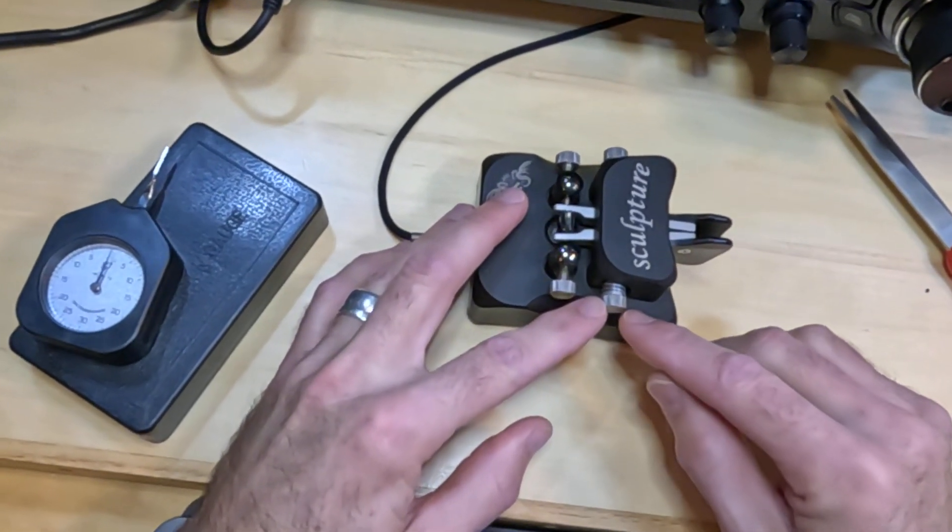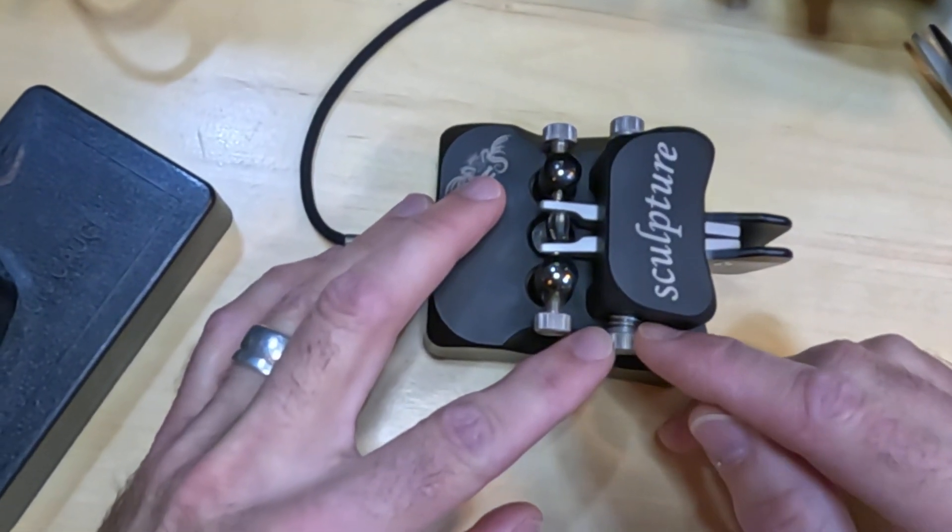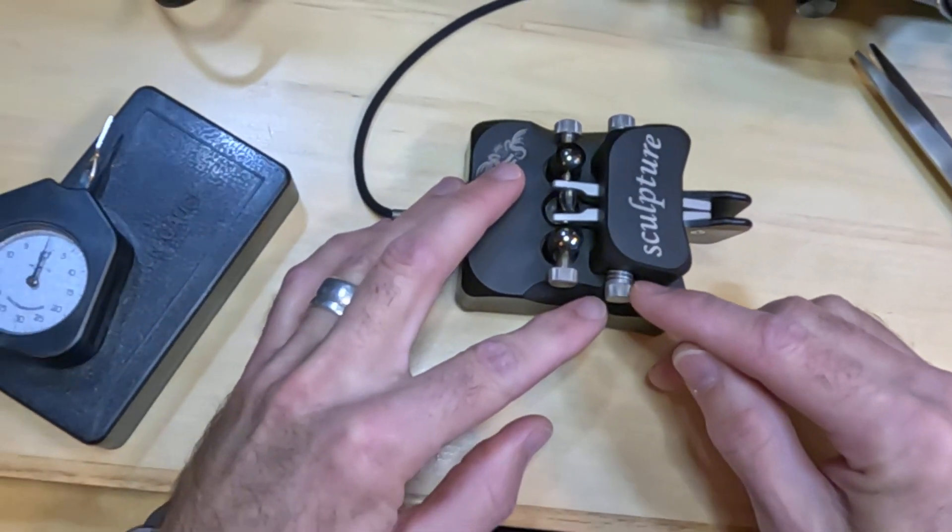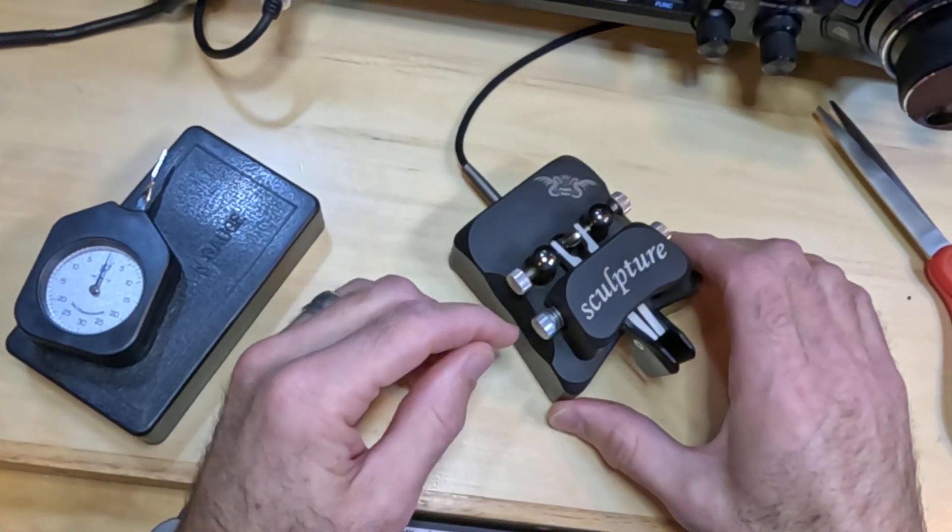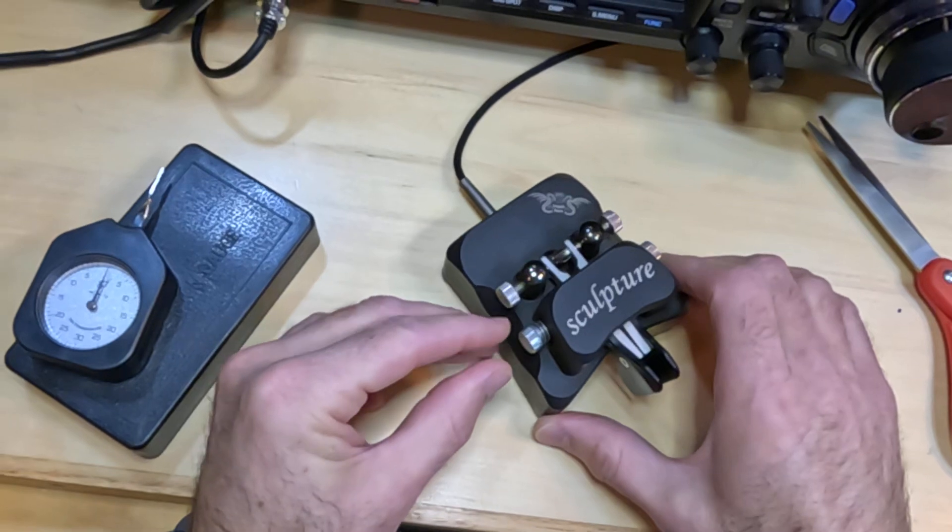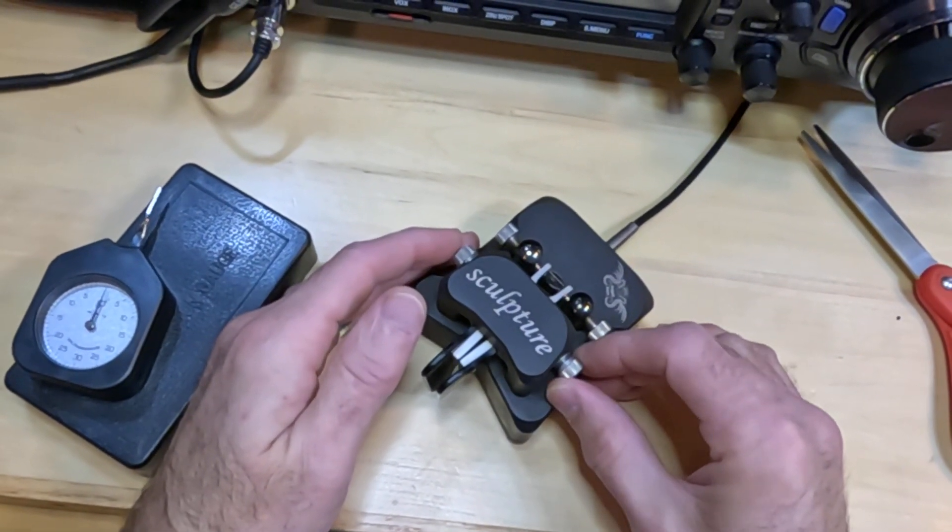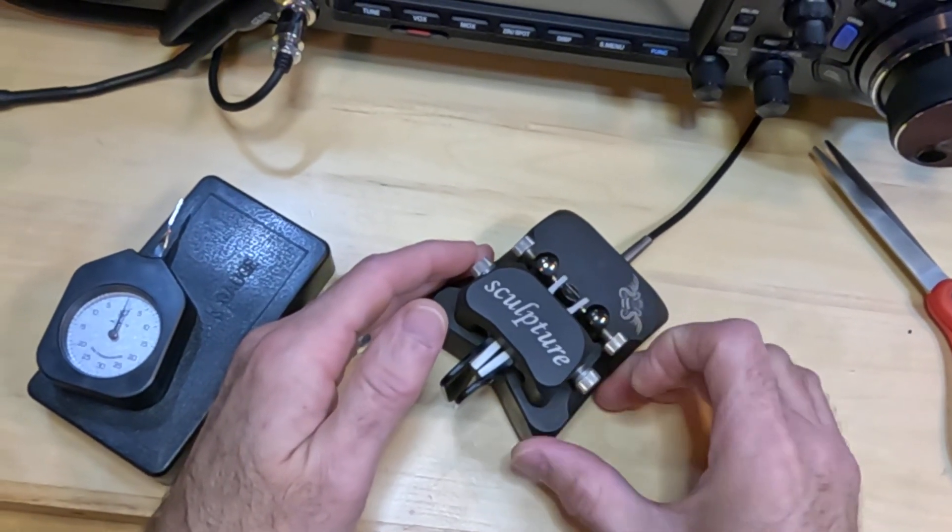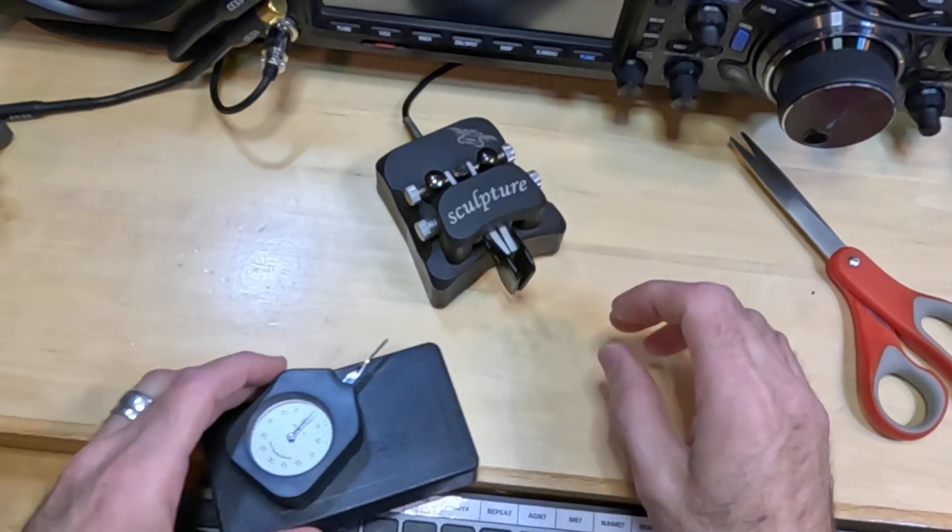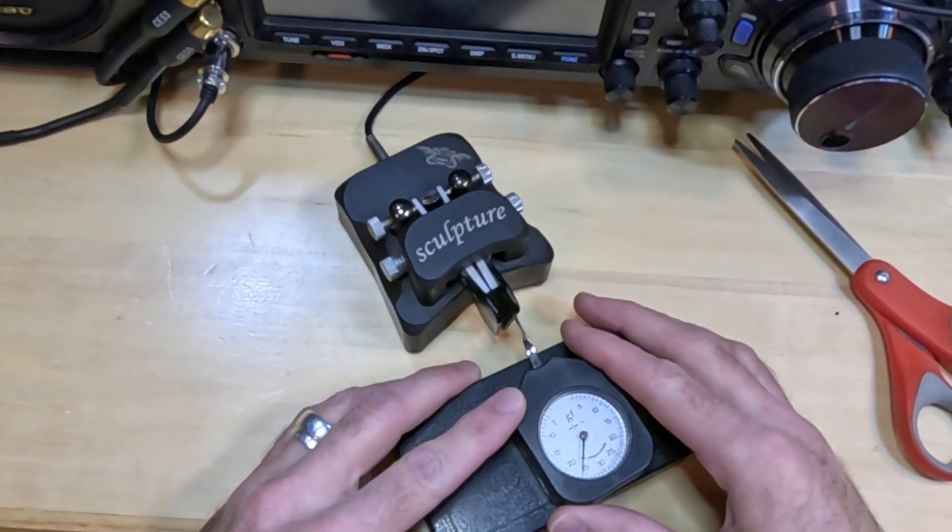So I went to Westlake Ace Hardware and I picked up some tension springs. I just took the spring and clipped it to the right width and inserted that in both sides. And that provides just enough tension to make it less easy to turn these adjustments. So that might be one thing you want to do if your key is going outside the shack frequently.